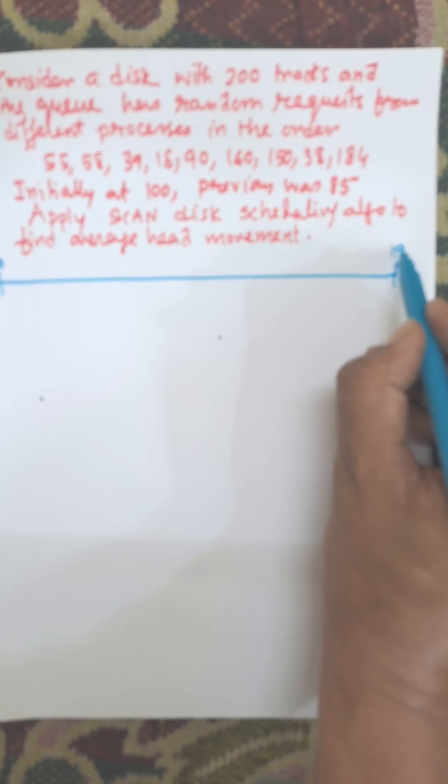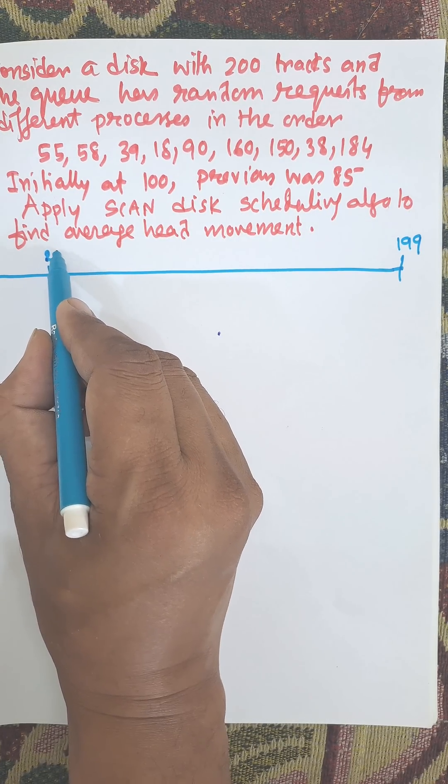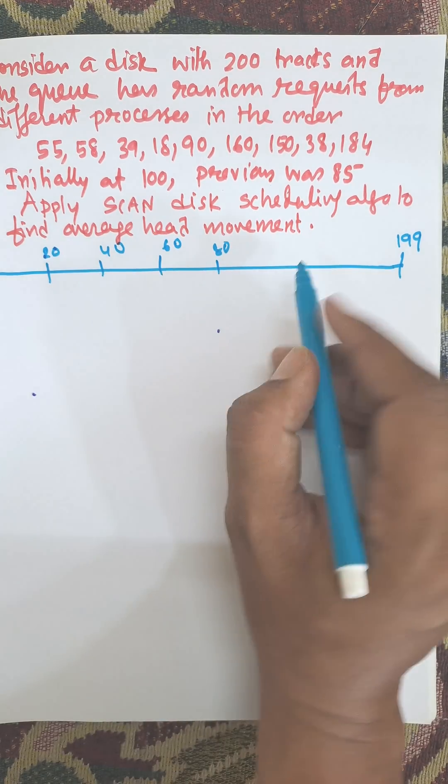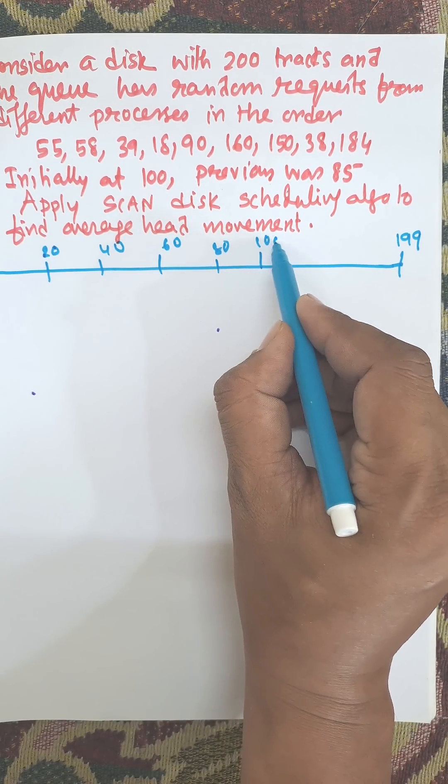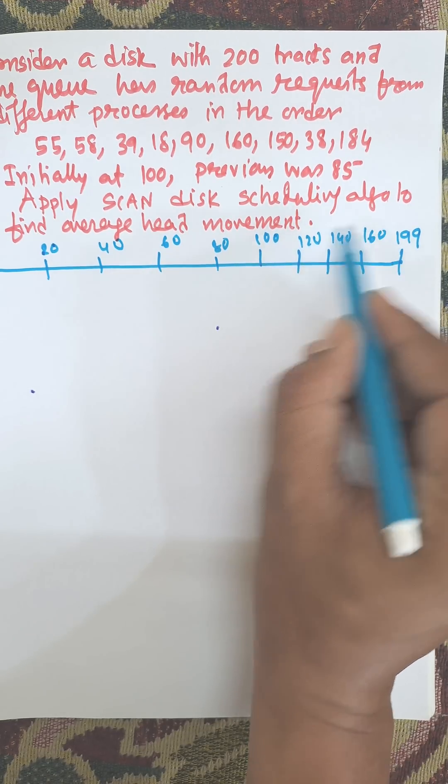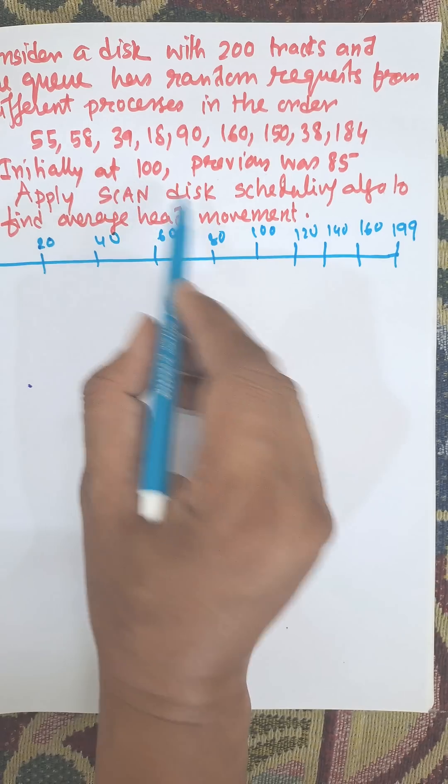Divide this cylinder as: 20, gap is 40, 60, 80 (you can put it as 10 gap also), 100, 120, 140, 160, remaining up to 199. Initially the disk is at 100.